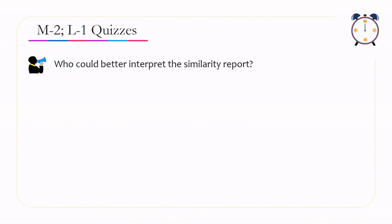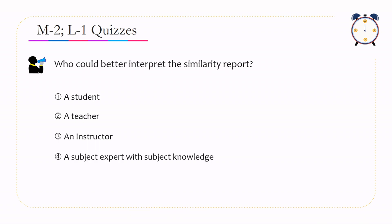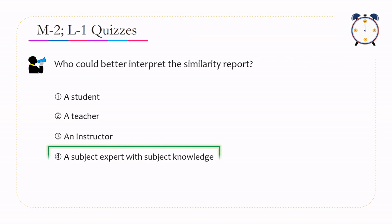Next question: Who could better interpret the similarity report? Option 1: a student. Option 2: a teacher. Option 3: an instructor. Option 4: a subject expert with subject knowledge. Option 4 is correct — a subject expert, who may be your teacher or instructor with in-depth knowledge in your field, can better interpret the similarity report.